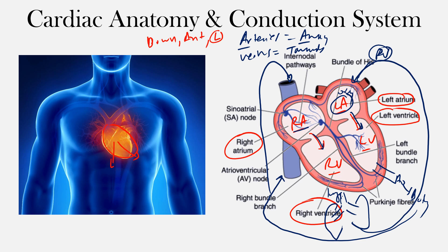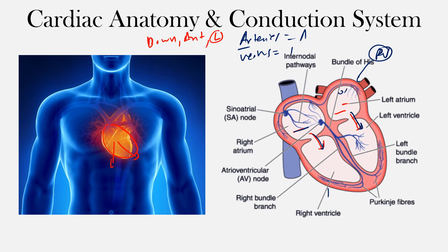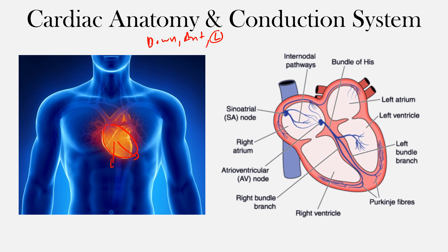Another important anatomical point is that of the four chambers, the right ventricle is the most anterior chamber of the heart. It sits most anteriorly, meaning this front-facing portion of the heart is actually the right ventricle. We'll look at certain EKG leads in upcoming lectures that tend to cover that anterior position.